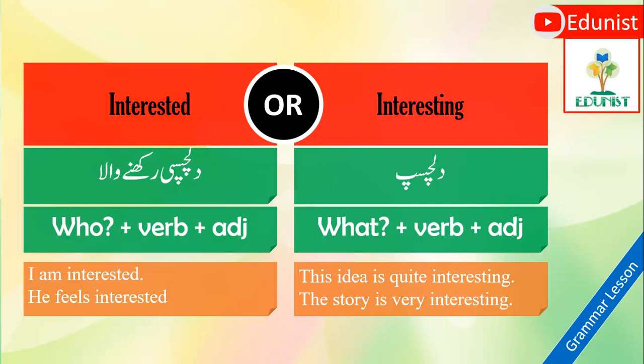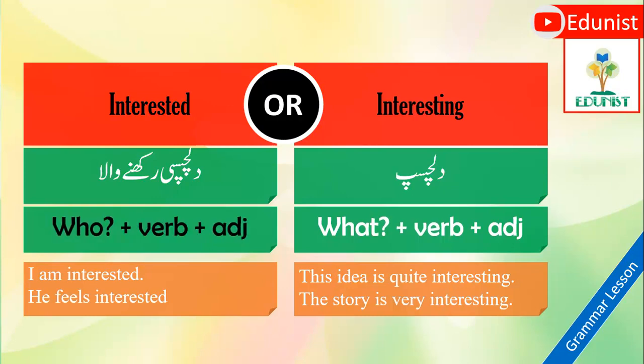Here I have 'entrusted' and 'entrusting.' For the structure, you will always use a person's name — you can use a pronoun or a name — and then place the -ed adjective. For example: 'I am interested,' 'He feels interested.' This is how you can use it. The -ed form is always used for people.